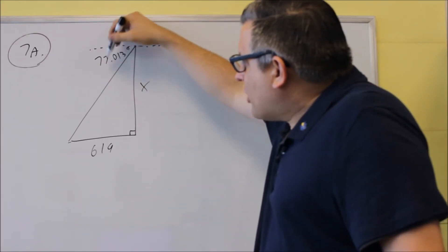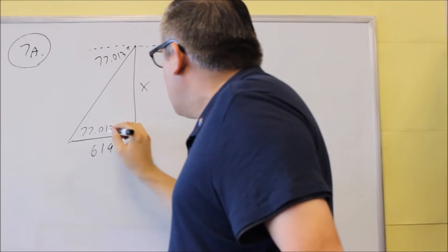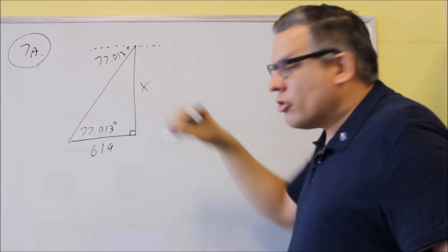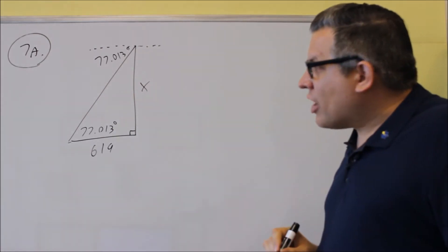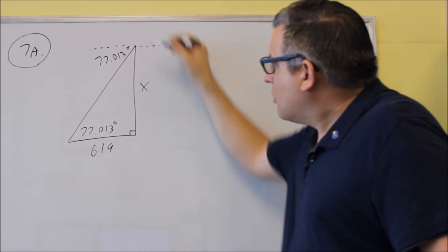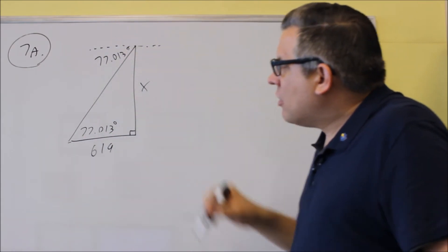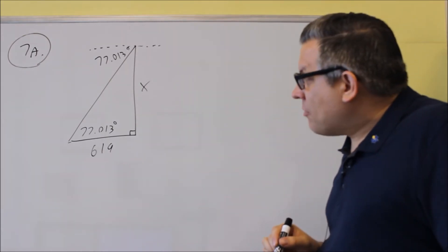If this angle is 77.013, that means this one inside is also equal to 77.013, because we're talking about alternate interior angles. If you have parallel lines like this, it means this inside angle is going to match this inside angle there. Alternate interior angles allows us to do that.